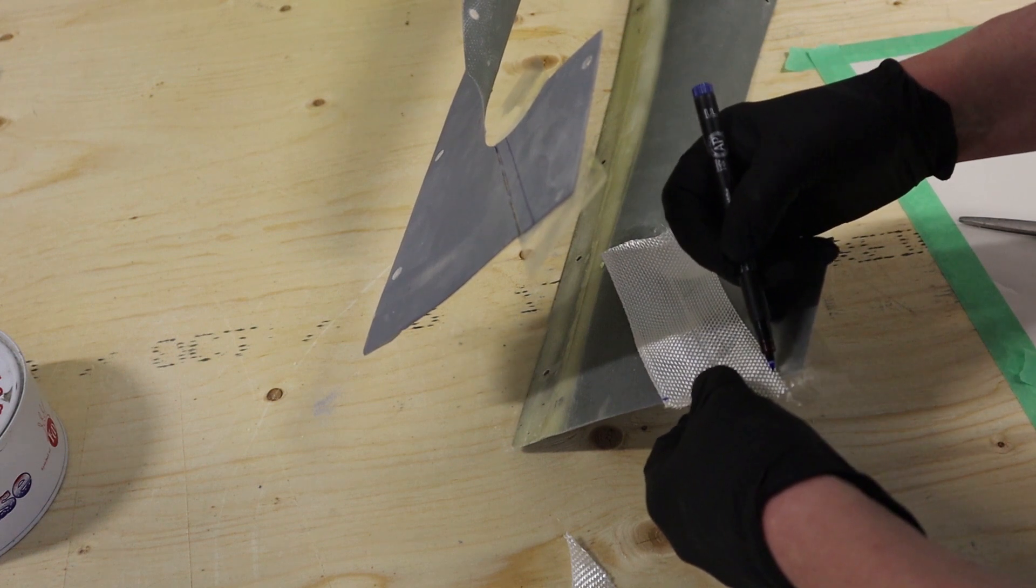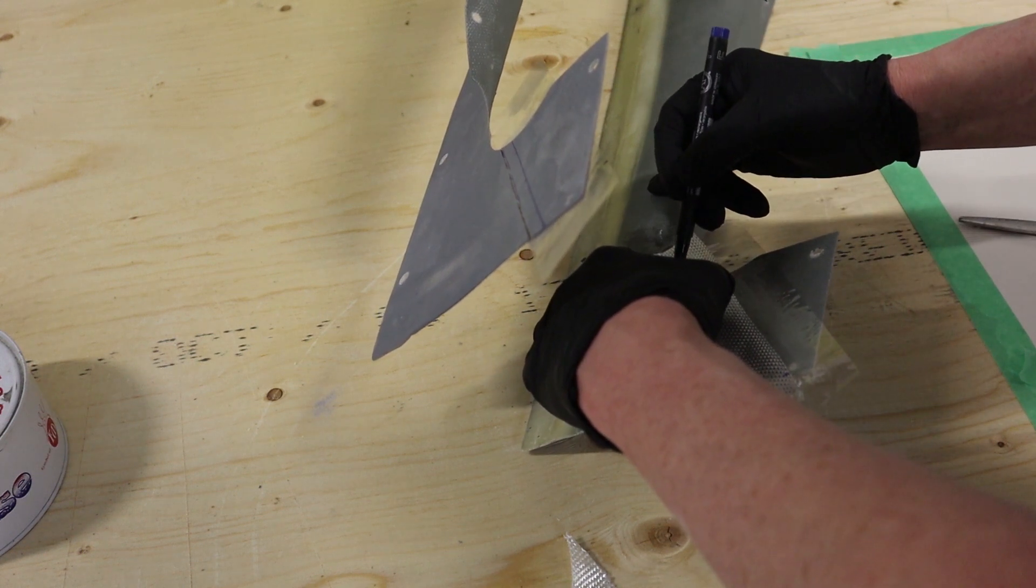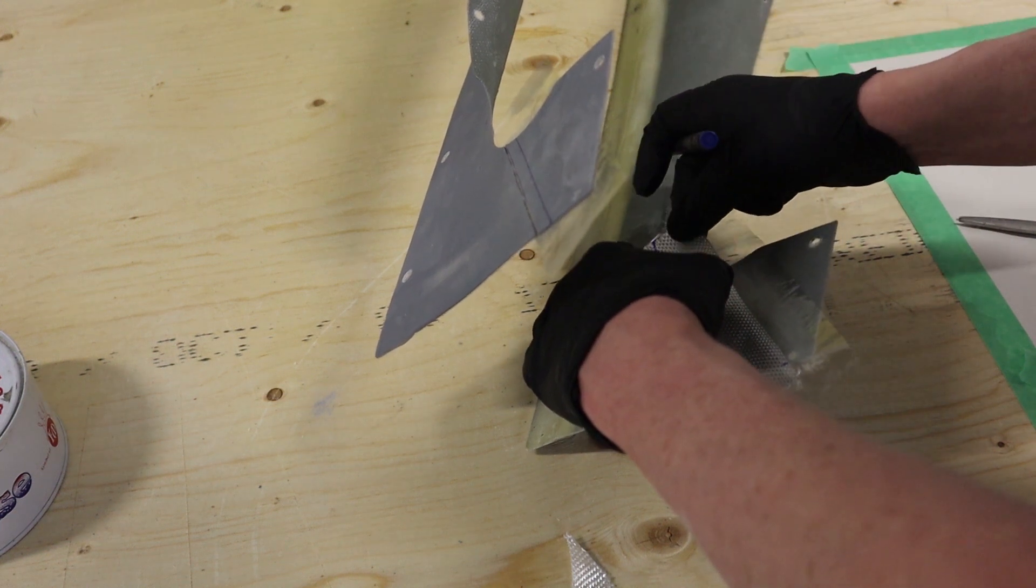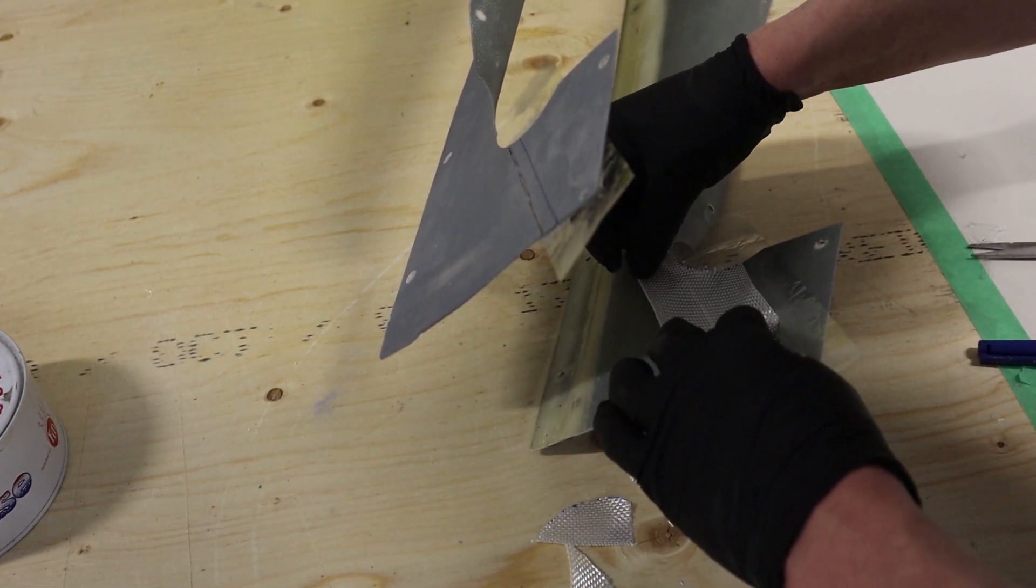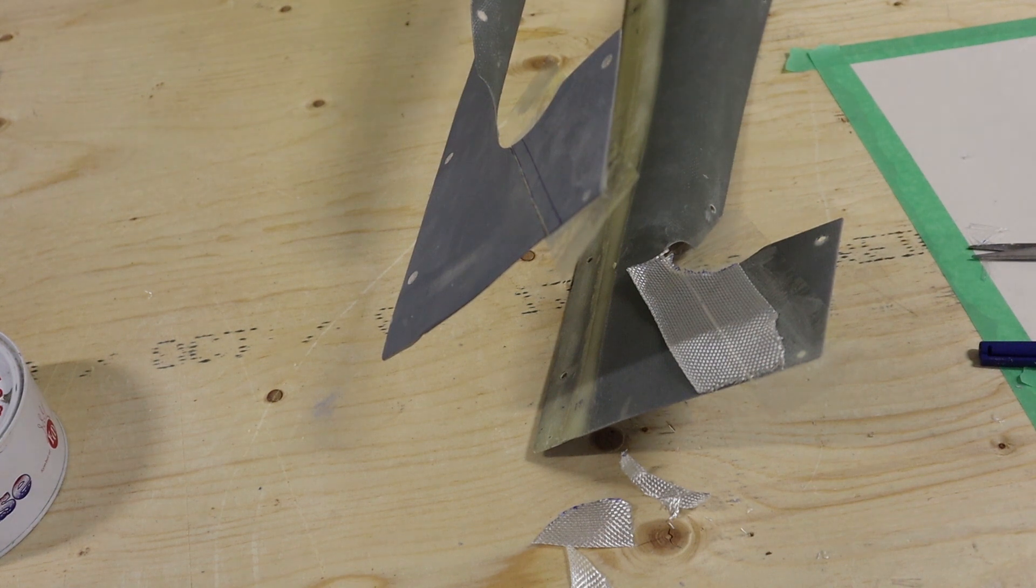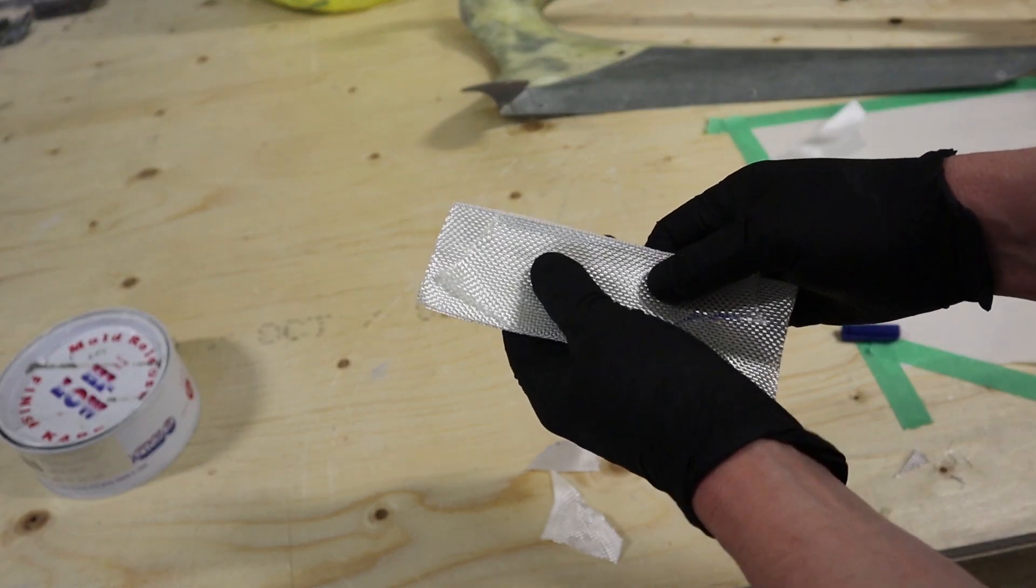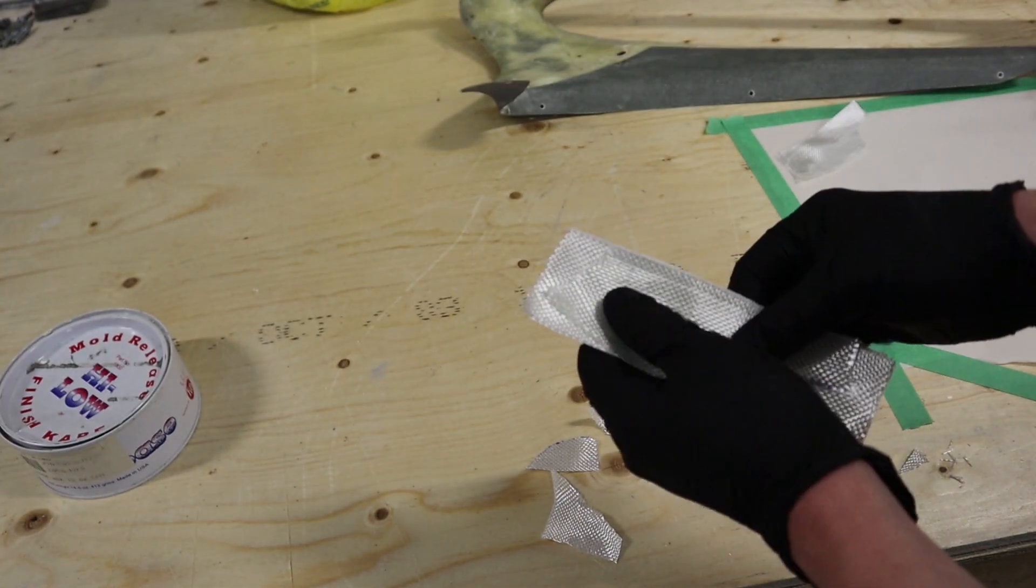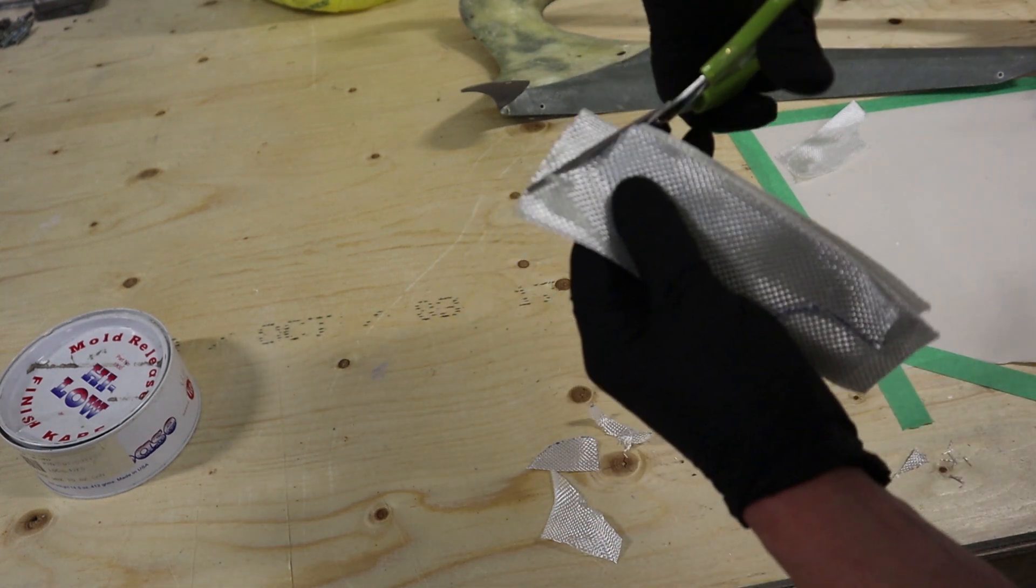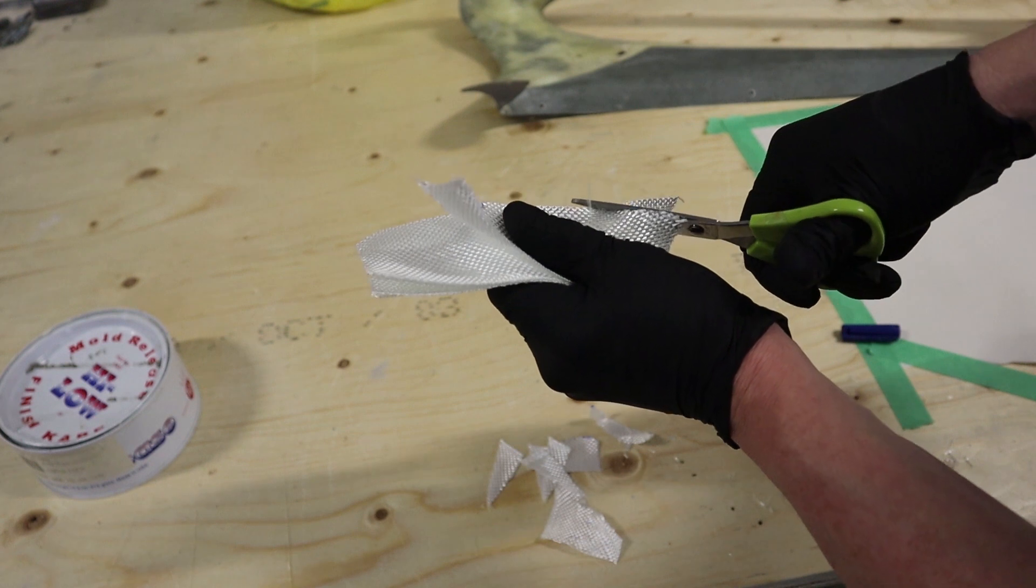I'll just use tape fiberglass, this is about an inch and a half in width. Create a little pattern for ourselves, use that pattern to cut the other pieces out a little bit too long.